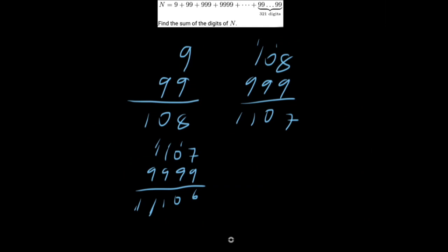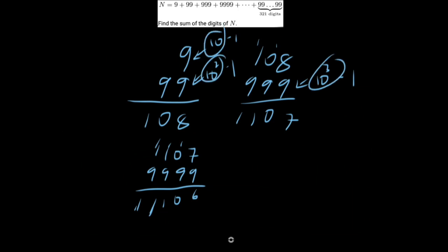Let's try not to think about this problem in terms of 9s. Whenever we're adding things, we want to do it in the cleanest method possible. So we can rewrite these 9s in terms of 10s. So 9 is 10 minus 1, 99 is 10 squared minus 1, 999 is 10 cubed minus 1, because 10s are a cleaner number to add — they don't have any carrying or anything messy.